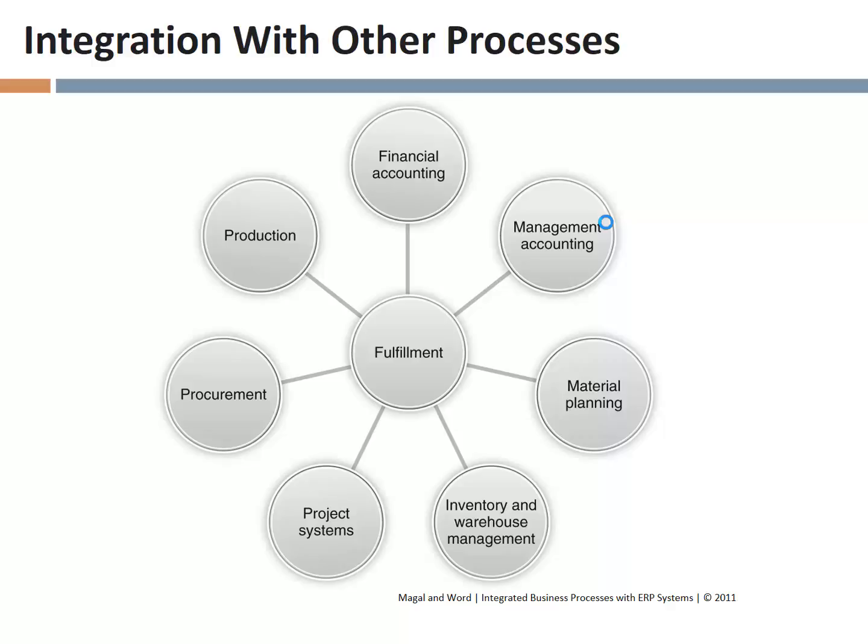Procurement — what is the point of interaction between procurement and fulfillment? Trading goods. We're talking about things like when materials are due in. Material planning plays a role in the available-to-promise check, and procurement also plays a role. If it's not something we're making but something we're buying, we need to know from the procurement process when it is due in. That's the point of integration between fulfillment and procurement.